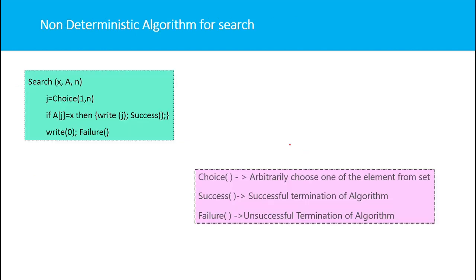Consider this example: a non-deterministic search algorithm. We know the best search algorithm is binary search with complexity O(log n), but here I am proposing a search algorithm that can perform a search operation in O(1) — constant time. To do this, I take the input x, the element to be searched, and an array of elements of size n, and then I use a procedure called 'choice', passing the index range 1 to n, which returns j.